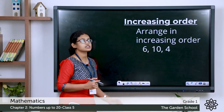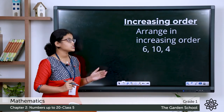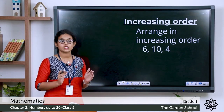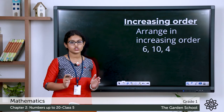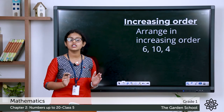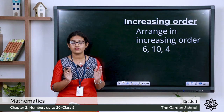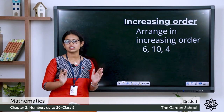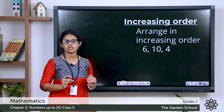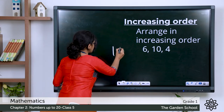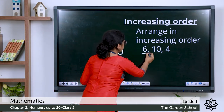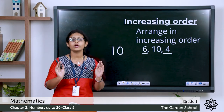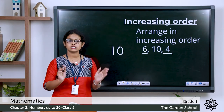Let's arrange the numbers in increasing order. Here we have three numbers: 6, 10, and 4. So 6 and 4 are one-digit numbers, and 10 is a two-digit number. We have learnt that two-digit numbers are always larger than one-digit numbers. So which one is larger? Number 10. So we'll write number 10 at the end. Now let's see 6 and 4.